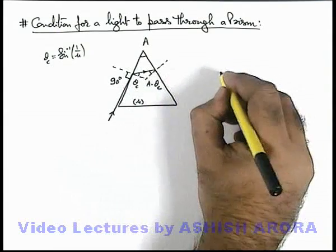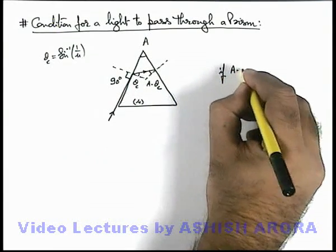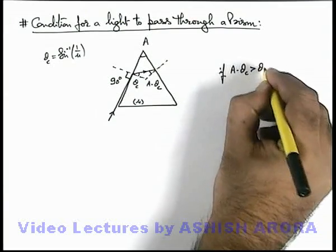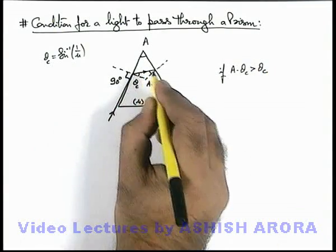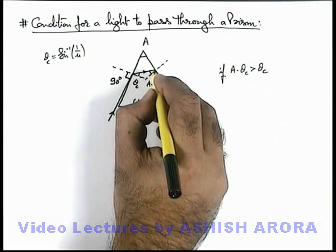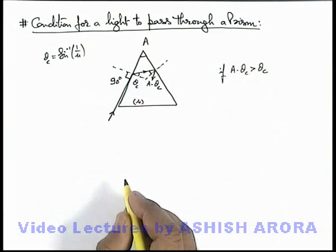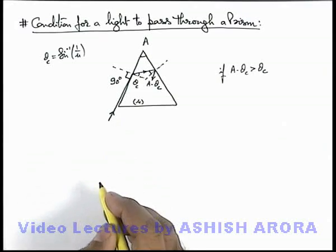Now in this situation, if A minus theta c is more than theta c, then the light will be internally reflected from the other face. It will not emerge out into air.